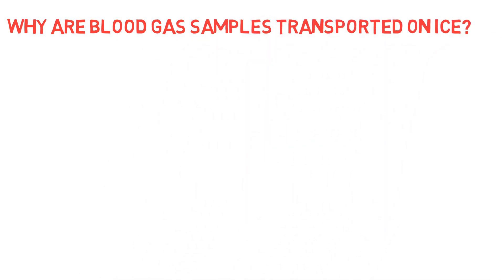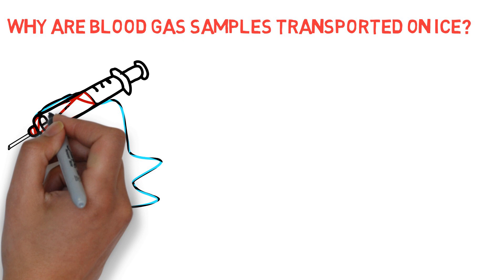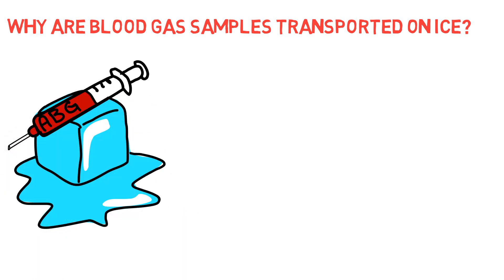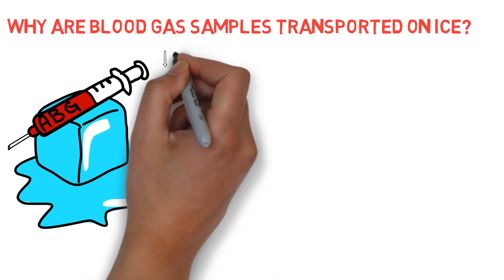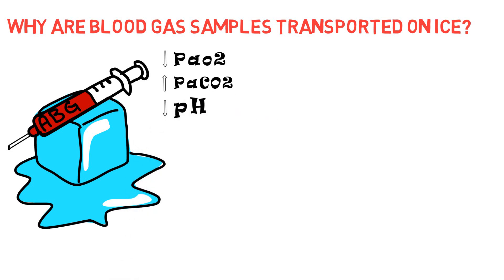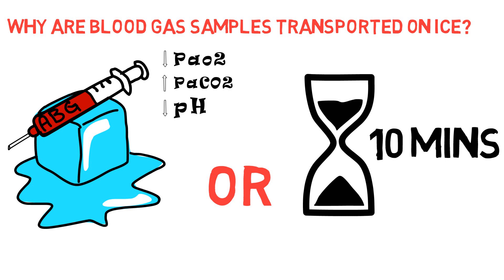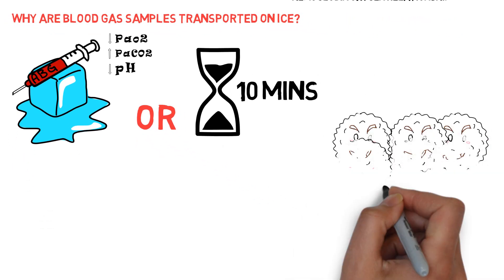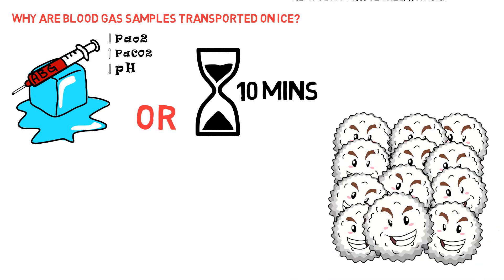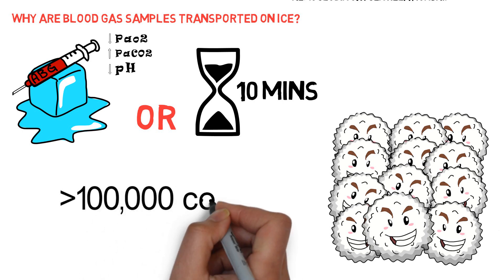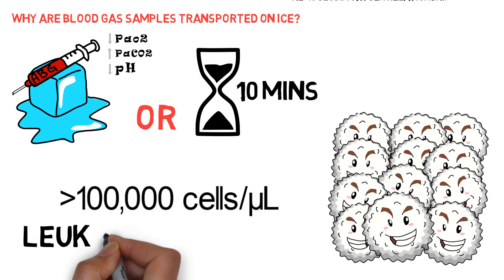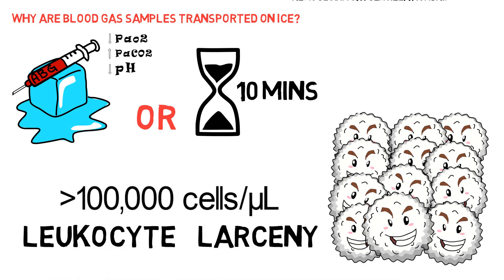Why are blood gas samples transported on ice? Metabolism by blood cells continues in the syringe until the sample is analyzed, causing a decrease in PO2, an increase in PCO2, and a decrease in pH. This can be diminished by transport of the sample in ice, water, or slush unless the sample is analyzed within 10 minutes. The metabolic effects on the blood sample are caused primarily by the activity of leukocytes. In patients with leukocytosis with WBCs more than 100,000, the PaO2 on the blood sample may decrease very quickly, which is called leukocyte larceny. It may be impossible to accurately determine the PaO2 of patients in extreme leukocytosis, and in vivo methods, for example pulse oximetry, may be more valuable in those situations.